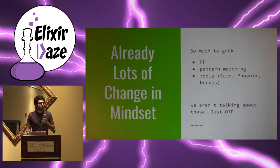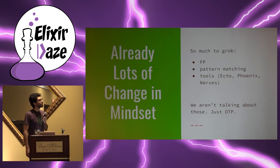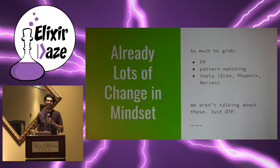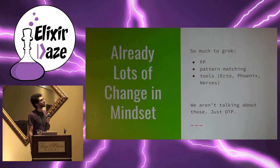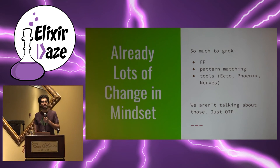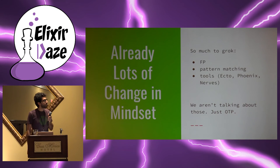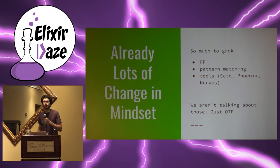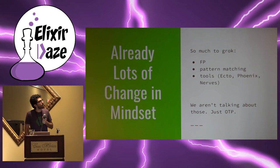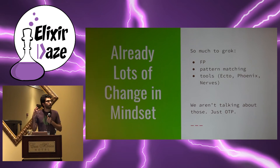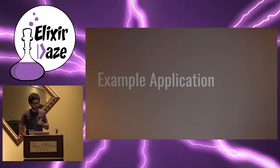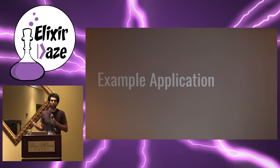But there's already so much to do. Those coming from Ruby, Java, or object-oriented languages have to first grok functional programming. We also have to understand things like pattern matching and language features of Elixir. And we have to understand the toolset — Ecto, Phoenix, Nerves, and many other libraries. This talk isn't about all of those. The change in mindset we're talking about here is just for OTP. This doesn't solve all our problems, but let's try to use what I'm suggesting and see how it turns out.